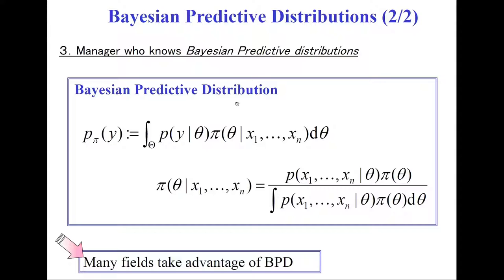This is the formula of a Bayesian predictive distribution. Please see P(Y|theta): this is a Gaussian distribution, but the parameter theta is unknown. So we take the average with respect to theta, multiplied by the posterior distribution. This posterior distribution — that is, the conditional distribution of parameter theta — is given by Bayes' theorem. Many fields take advantage of Bayesian predictive distributions.